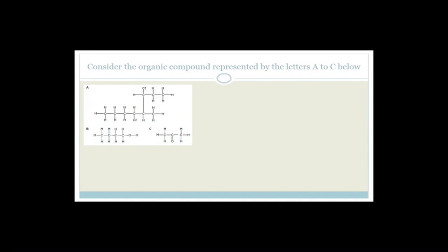After these exam questions, we'll go through the chemical reactions: halogenation, hydrohalogenation, substitution reactions, elimination reactions, and combustion. The first question asks us to name the homologous series to which compound C belongs. Compound C has a double-bonded O in the middle of the chain — so the homologous series is ketones.